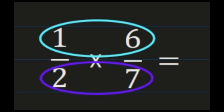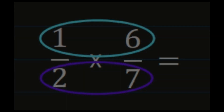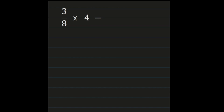Let's take a look. For our first example, we have 3 eighths times 4. We just said that we need to multiply numerator by numerator and denominator times denominator. So we need to look at that whole number 4 and turn it into a fraction. To turn a whole number into a fraction, we put it over 1. I suggest rewriting your problem so that everything is lined up neatly.